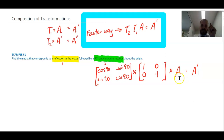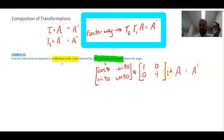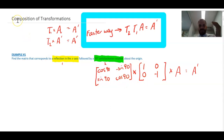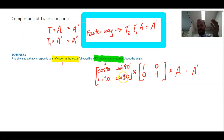We can take matrix T2 and matrix T1 and combine them into a single matrix, giving us the composition matrix.